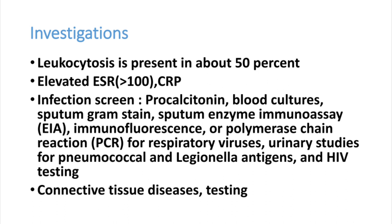In the investigation of cryptogenic organizing pneumonia, most patients will have a high WBC count, ESR highly elevated above 100, and elevated CRP. For any patient with bilateral pneumonia, we must investigate for infections: procalcitonin to rule out bacterial infections, blood cultures, sputum gram stain, ELISA for suspected HIV, and PCR for viral diseases. Procalcitonin is very important in the emergency room — it will be positive in bacterial infection but may be negative in this type of pneumonia and viral pneumonias.